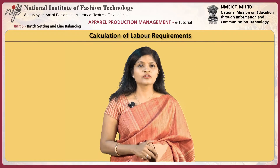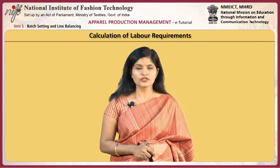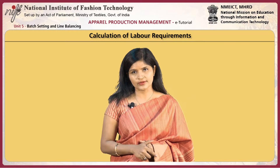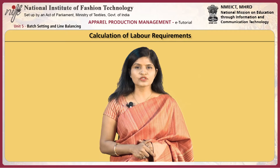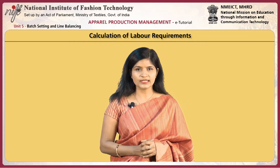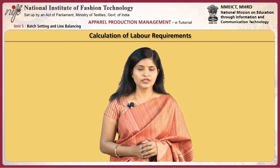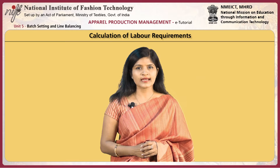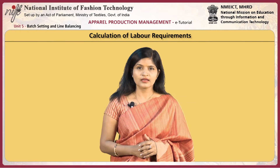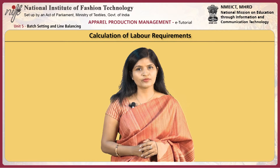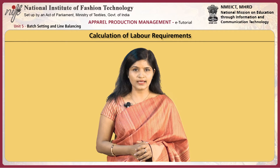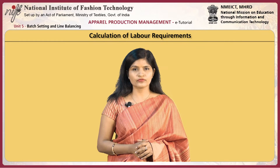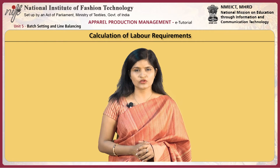Calculation of labor requirement: the first step is to allocate enough people to an order to ensure it is completed on time. The work content of one garment multiplied by the number of orders gives the work content of the order. This is divided by the time in which it must be completed to give the required output in standard hours per hour. Current figures for attendance, utilization, and performance are required. Floaters are needed to cover for absenteeism and balancing problems.